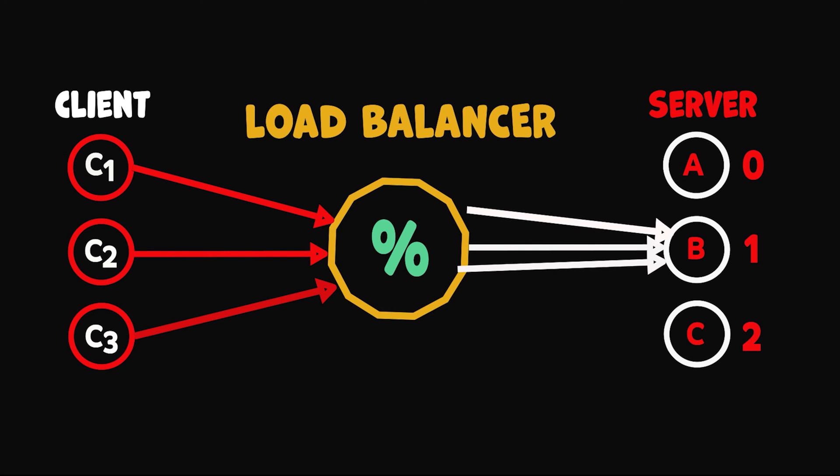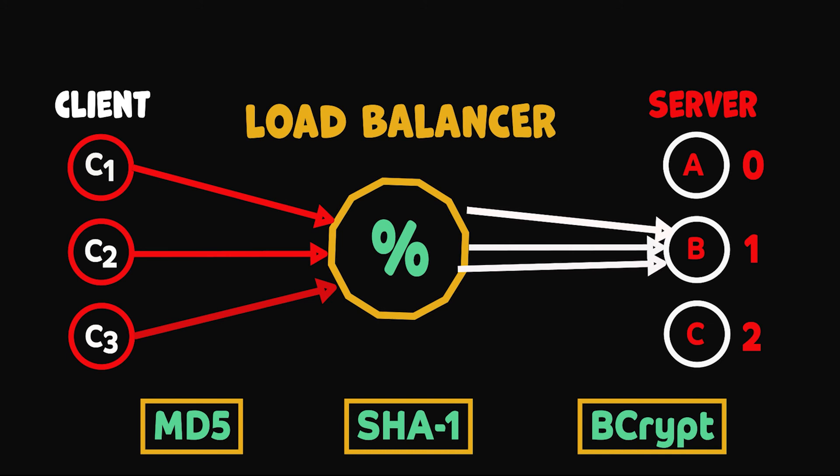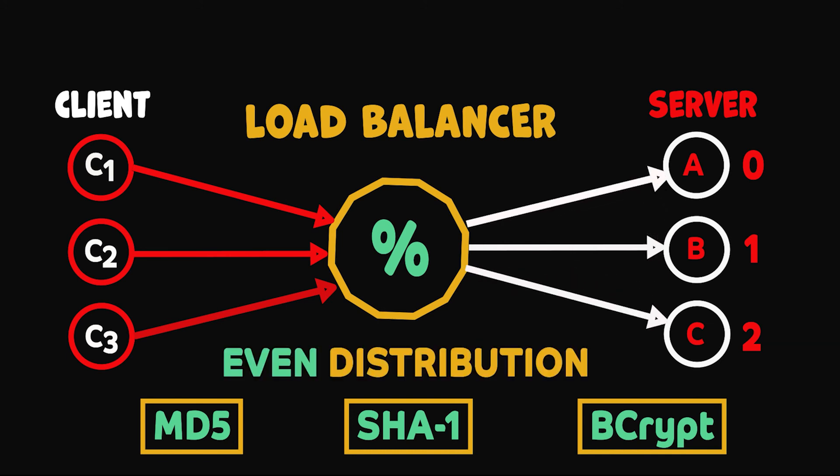Typically engineers don't write their own hash function from scratch. They use industry grid hashing functions such as MD5, SHA1 and Bcrypt and so on. You can be assured that these hashing functions provide even distribution by default.